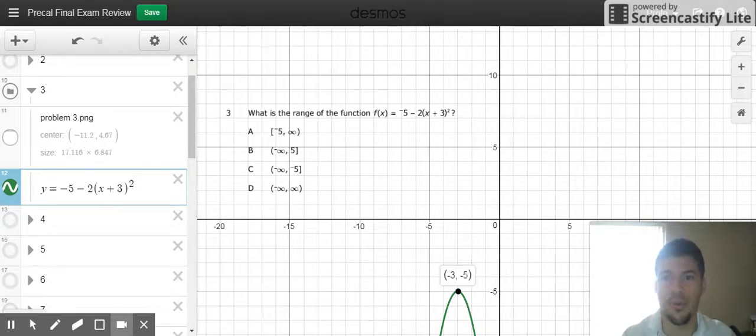All right, guys, so here's an overview of problem number three. What is the range of the function f of x equals negative 5 minus 2 times x plus 3 squared?